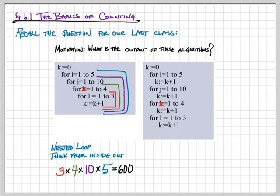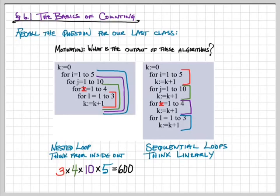For the second little bit of pseudocode, the loops now are sequential. We have to think linearly, and they don't really affect each other except that they change the value of k as they get executed. So, this time, when we execute the loop indexed by the variable i, we're going to increment our counter by five. And then, the second loop incremented by the variable j, it's going to change the value of our counter by ten. But this time, we end up adding the increments rather than multiplying, which gives us a total output of 22.